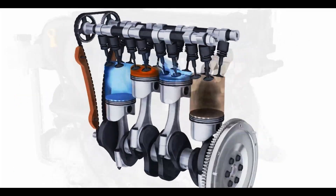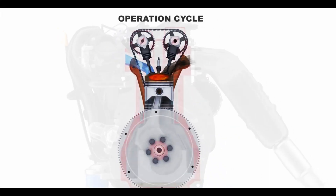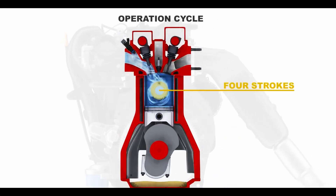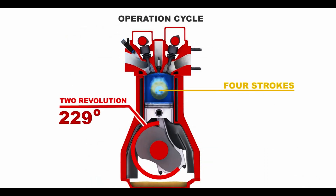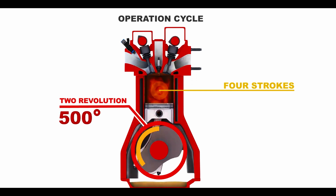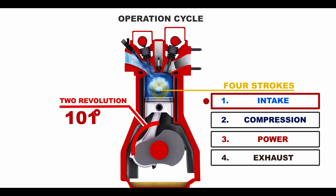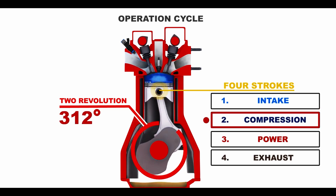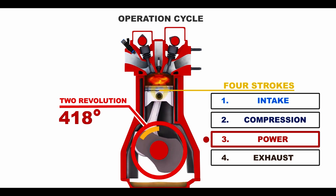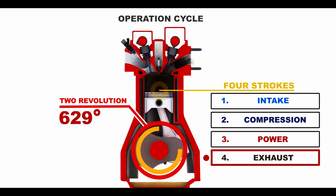For the sake of simplicity, we will only review the operation of one cylinder. The engine's operation cycle consists of four strokes, or two crankshaft revolutions: Stroke 1 – Intake, Stroke 2 – Compression, Stroke 3 – Power, Stroke 4 – Exhaust.